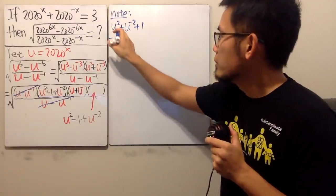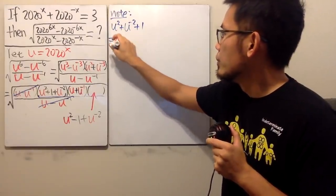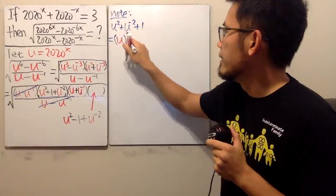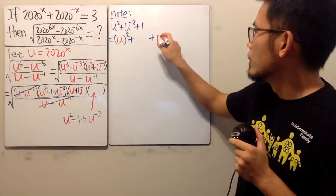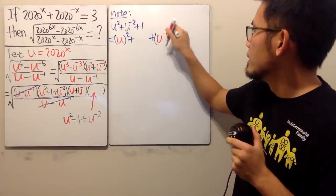Here, this is how we do it. Right here, you see, this is the same as saying, u squared, and then plus something, let me just leave a space, plus this right here is the same as u to the negative one squared, right?